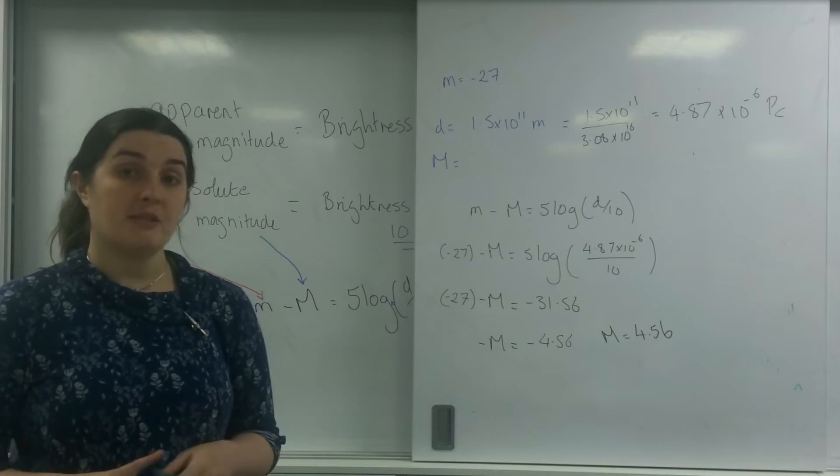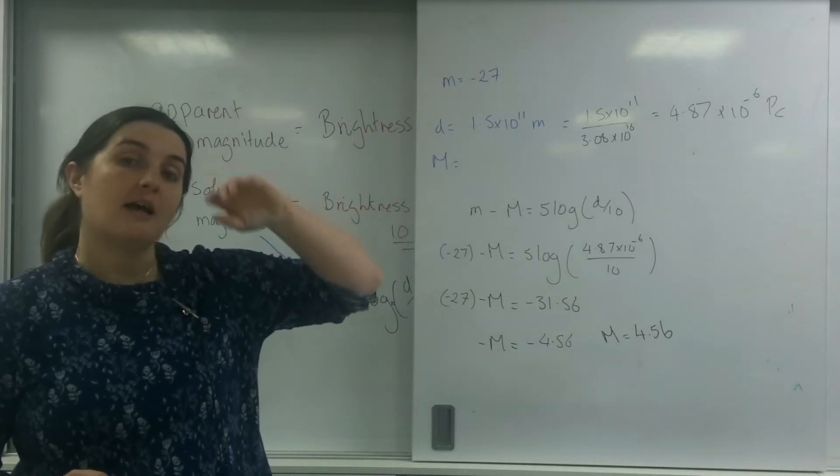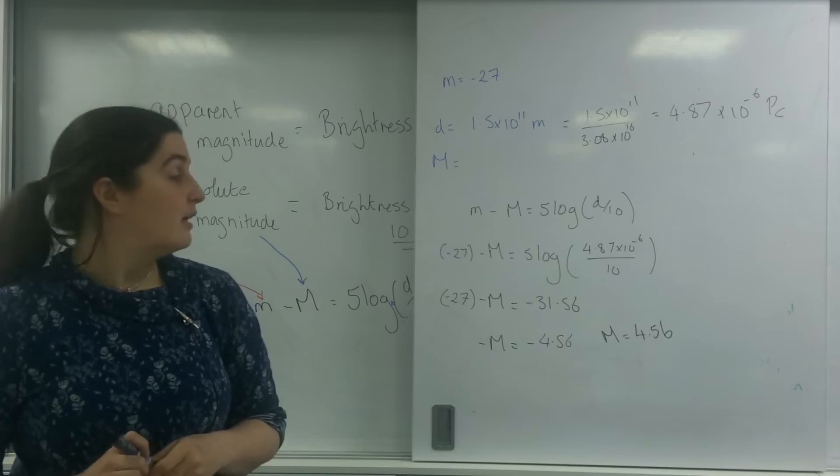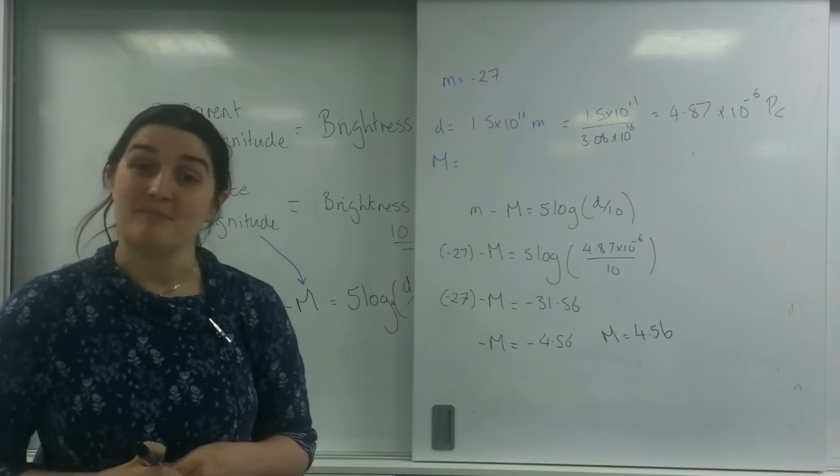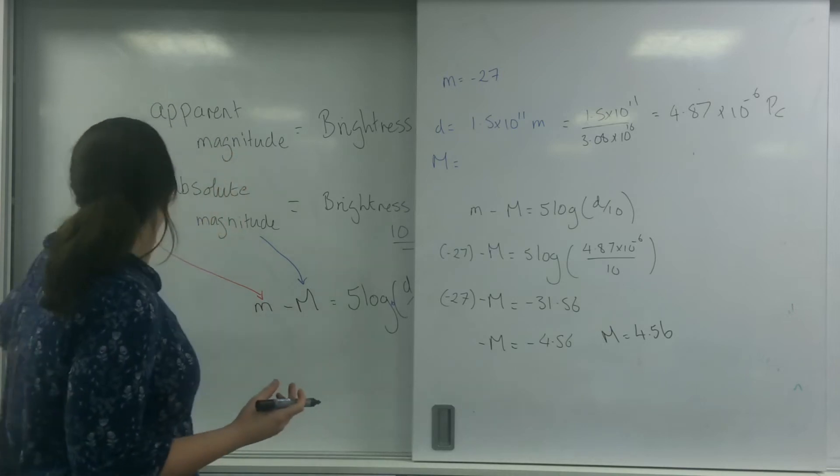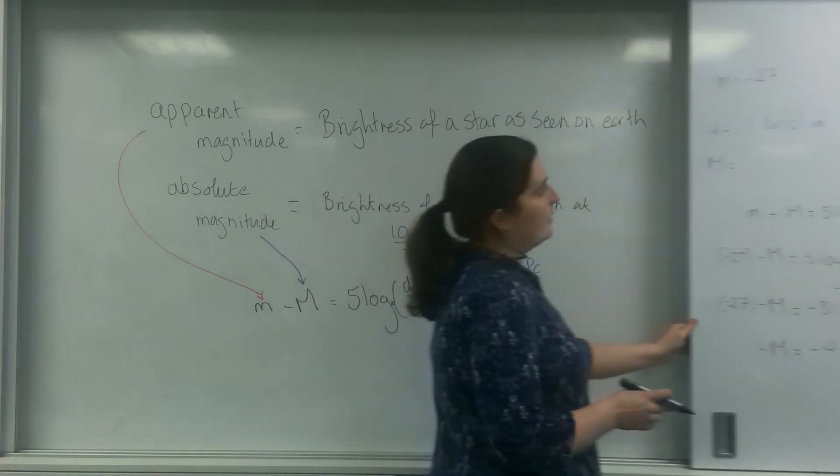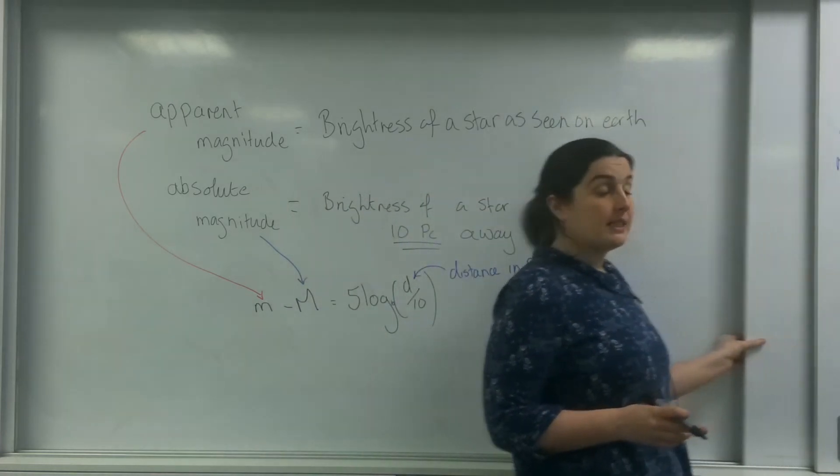Okay. If you remember, Hipparchus labelled them all from 1 to 6, where 6 was the dimmest and 1 was the brightest. 4.56 is quite dim. Okay. Now let's change this up a little bit. Let's get over the board here. So let's change this up and let's start looking for the distance.